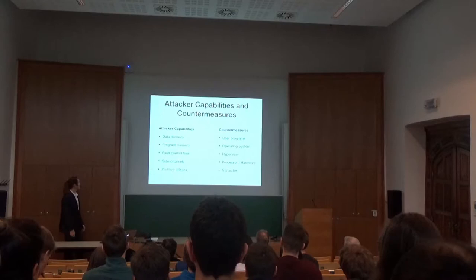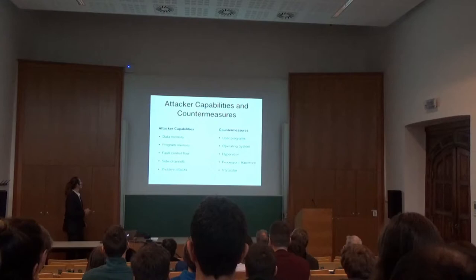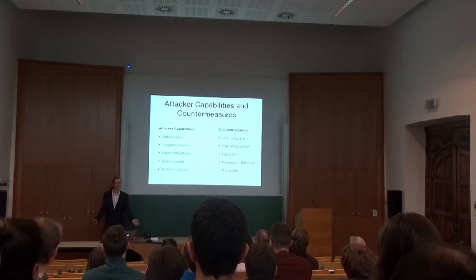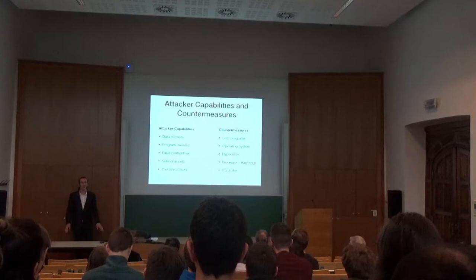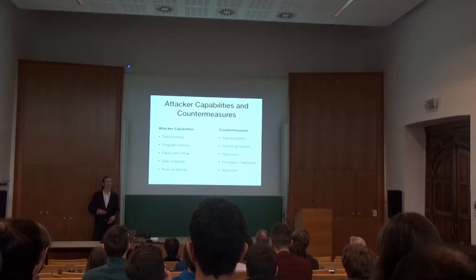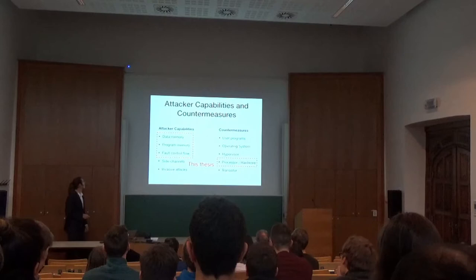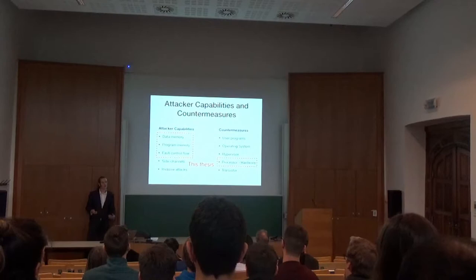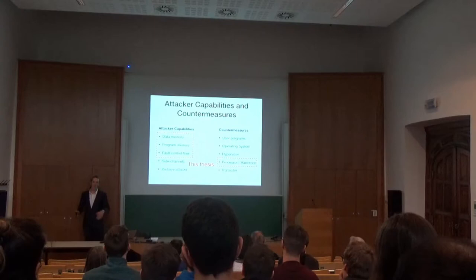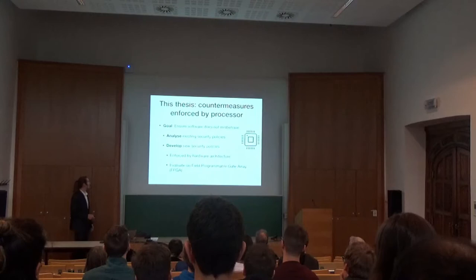There are many different attack capabilities you could assume. You could assume your attacker could be in full control of data memory, program memory, could launch fault attacks on control flow, perform side channel attacks, or launch invasive attacks on integrated circuits. Countermeasures can be employed on many different layers of abstraction — inside the user program, the operating system, the hypervisor level, inside the processor or hardware level, or on the transistor level. In this thesis, we mostly assume attackers capable of controlling data and code memory, as well as attackers that can mount fault attacks on the control flow. We develop our countermeasures inside the processor or hardware level.